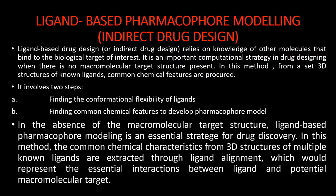The next type is ligand-based pharmacophore modeling, which is indirect drug design. Ligand-based drug design relies on knowledge of other molecules that bind to the biological target of interest. It is an important computational strategy in drug design when there is no macromolecular target structure available. In this method, common chemical features are extracted from the 3D structures of known ligands. It involves two steps: finding the conformational flexibility of the ligand, and finding common chemical features to develop the pharmacophore model.